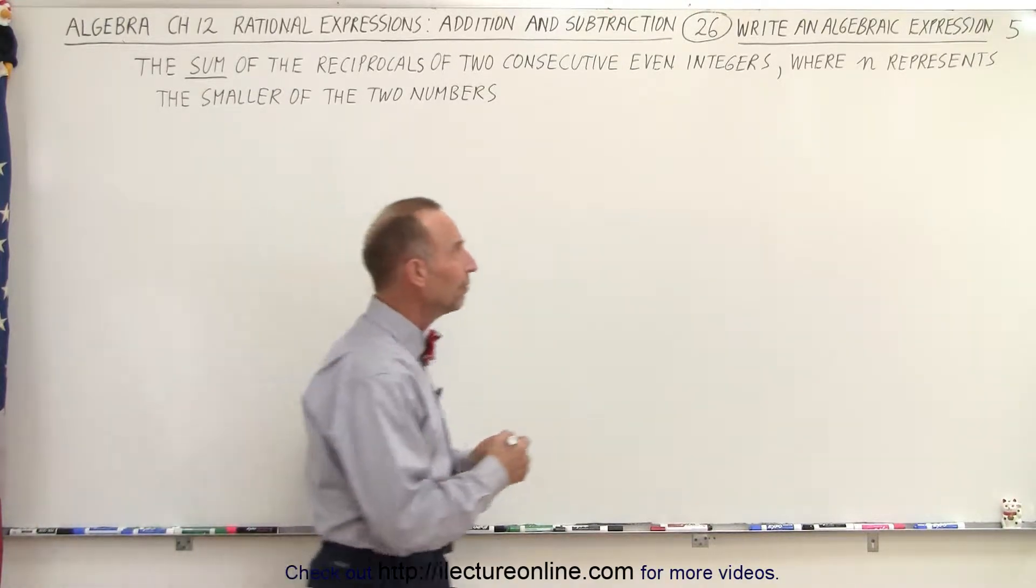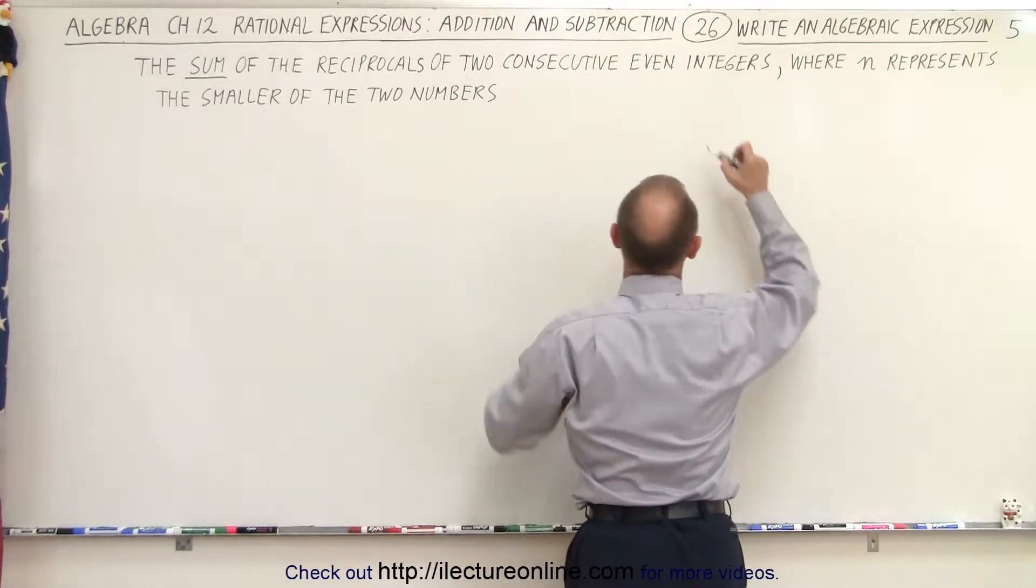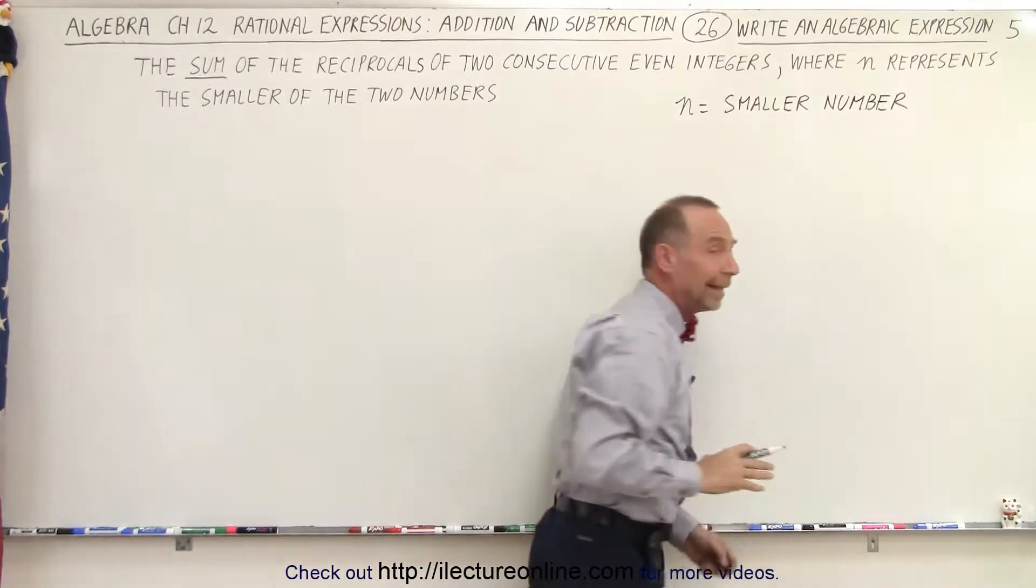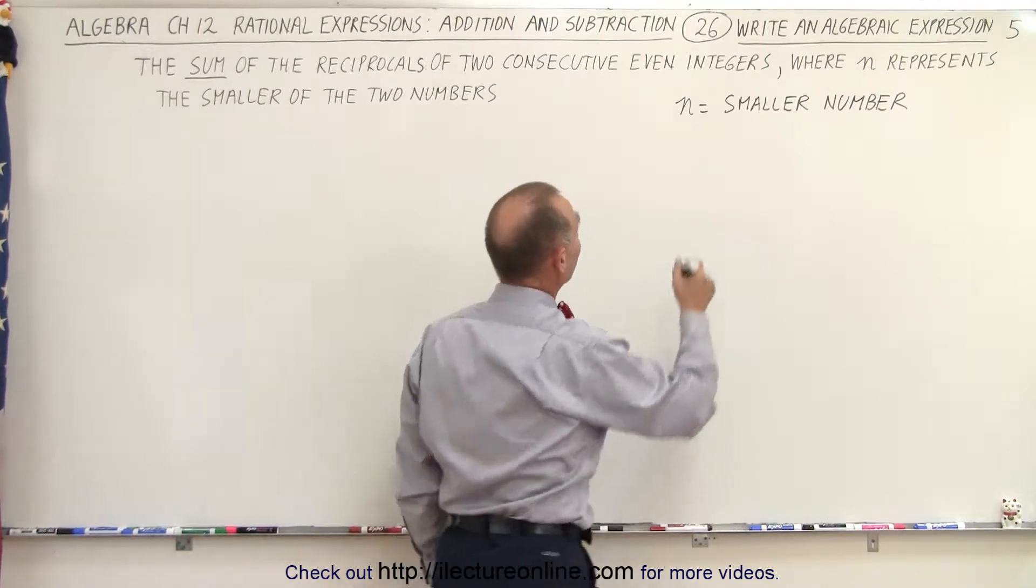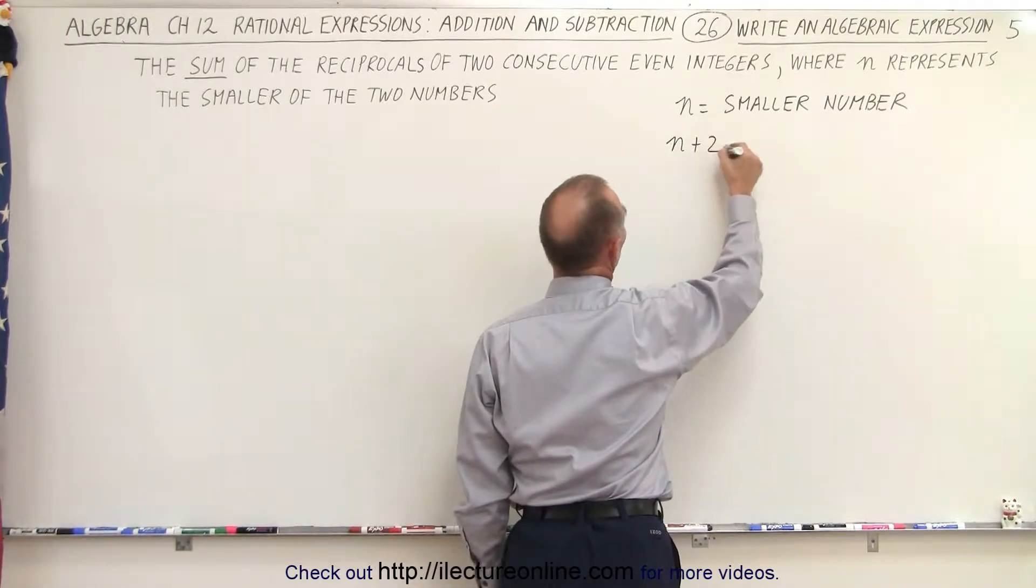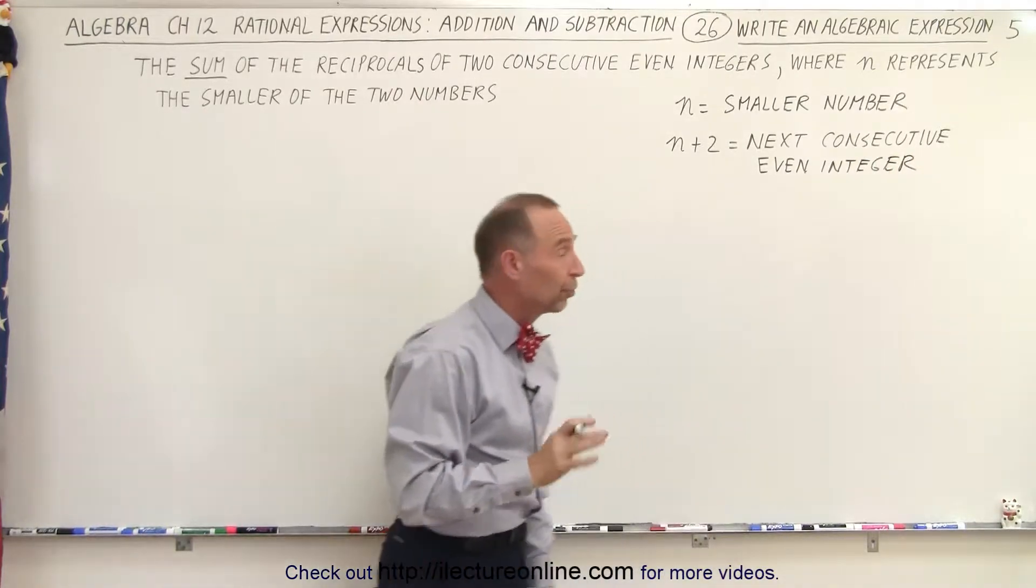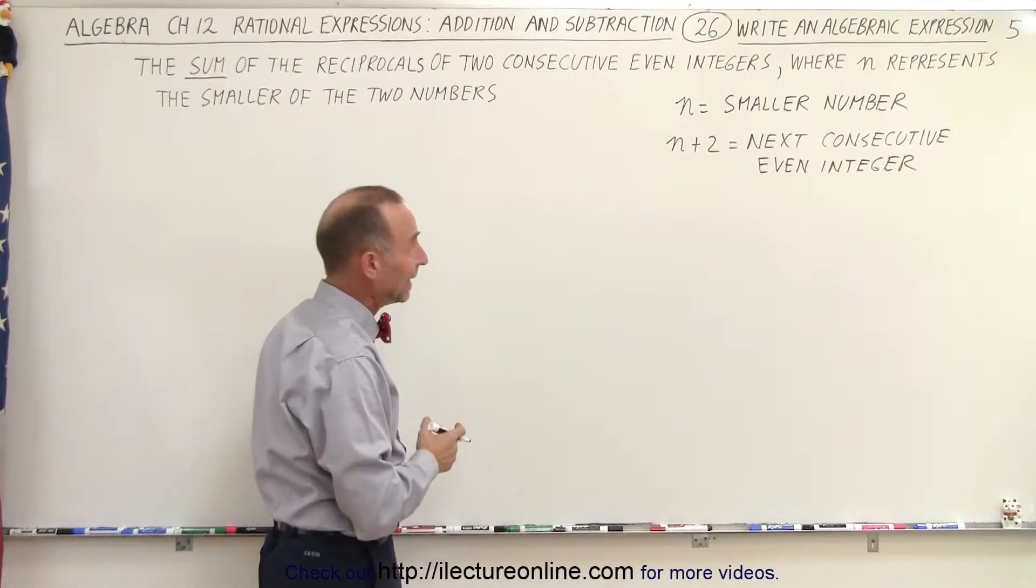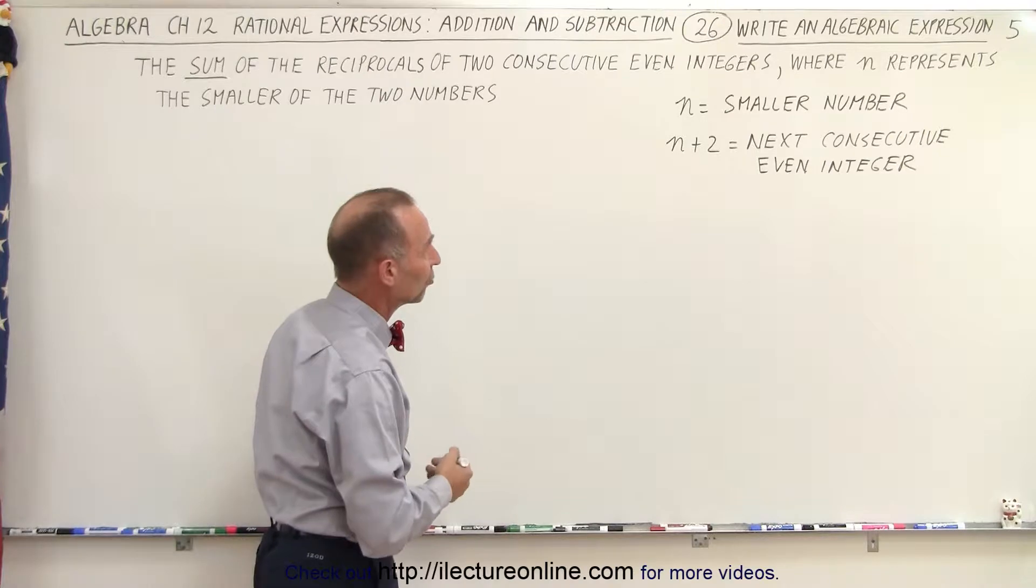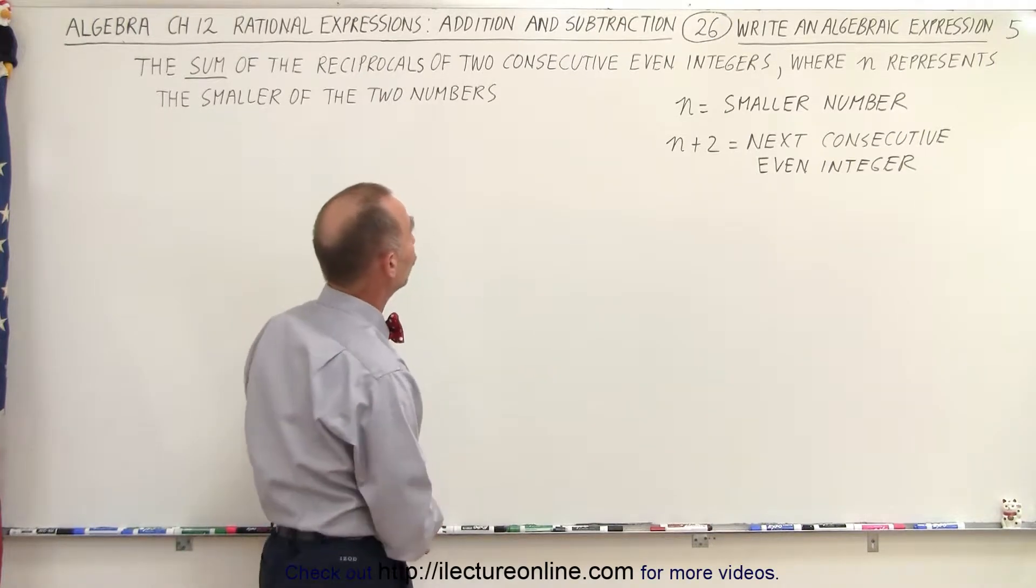So if we let n be the smaller number, then the next consecutive even integer would have to be n plus 2. So now we've established two numbers: the smaller number n and the next consecutive even integer, n plus 2.